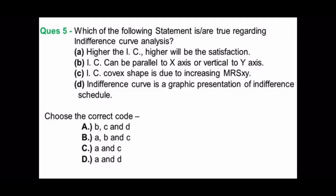C option: IC convex shape is due to increasing MRSXY - no, it's because of decreasing MRSXY, so C option is also cancelled. D option: IC is a graphic representation of indifference schedule - very right, we make IC from schedule. So A and D, so D option here is the correct code.